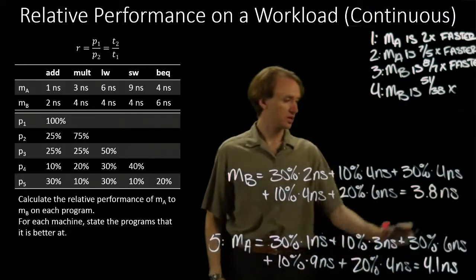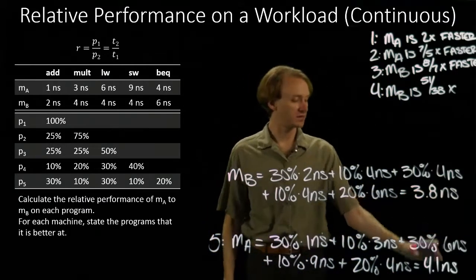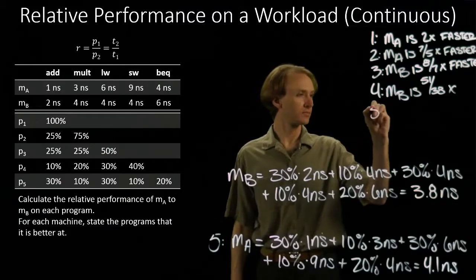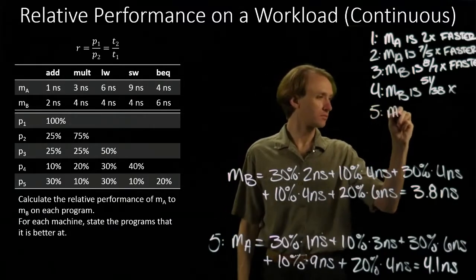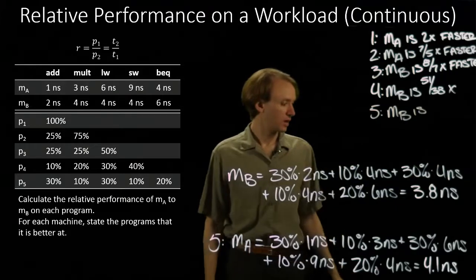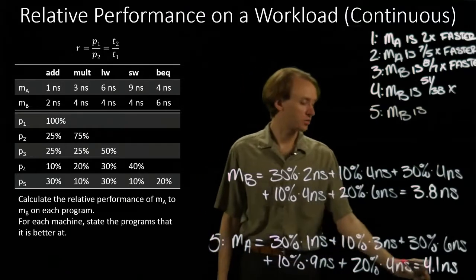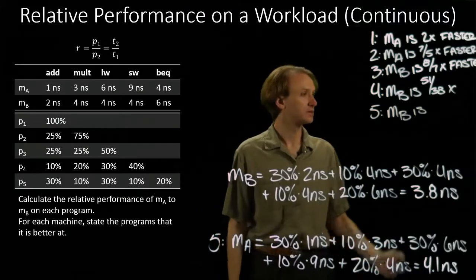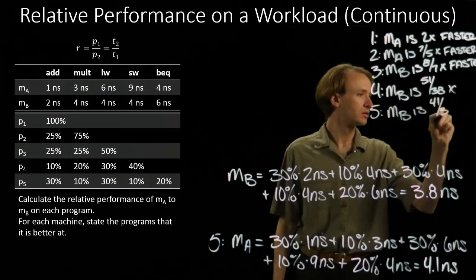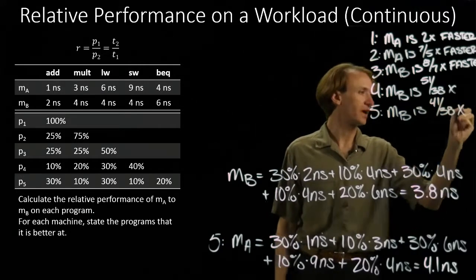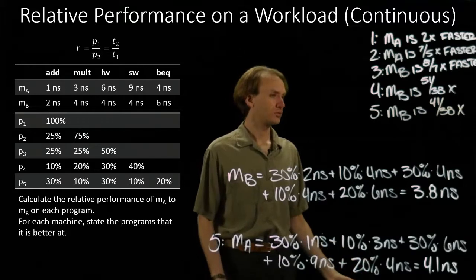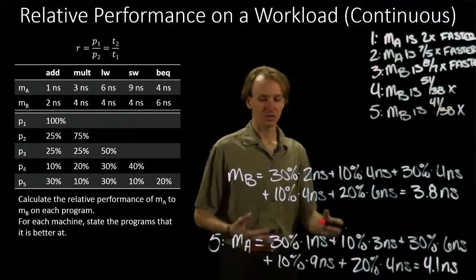So again, machine B is slightly faster than machine A — 41 over 38 times faster. Not a huge improvement, but there is some difference.